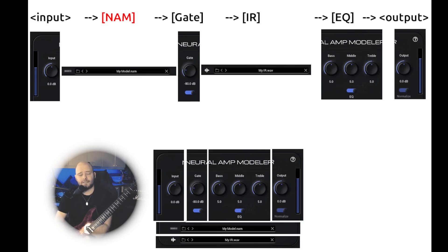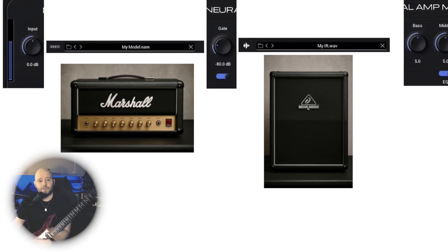Everything else in the plugin is just convenience, except for the actual profile loader. We guitarists know we need both an amp and a cabinet — otherwise it doesn't sound good. The signal goes into the cabinet, sound comes out of the cabinet, and it's captured with a microphone near the speaker in some room. You have a signal in, or an impulse, and then you get a response out — and that's an age-old technique: capturing the impulse response of a cabinet.